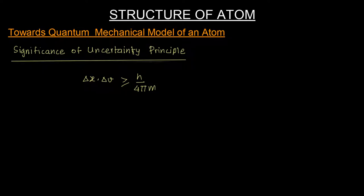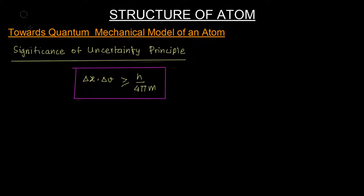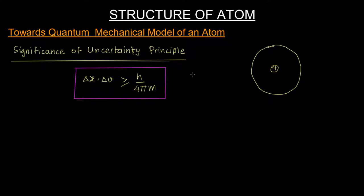What is so great about this inequality? The greatness of this inequality is that it, in one word, demolishes all the conventional systems that we were familiar with till now. We must remember that till now we were drawing an atom with a positive charge at the center, and around this, an electron moves in an orbit like that.